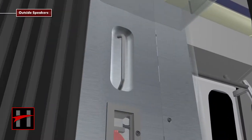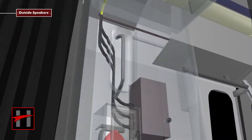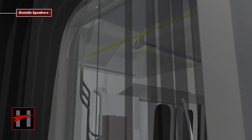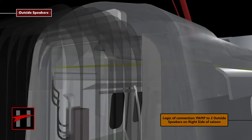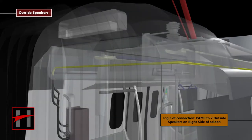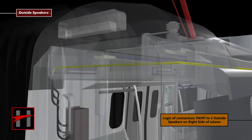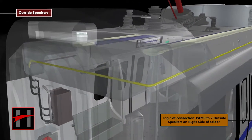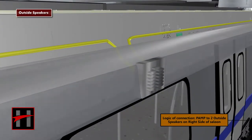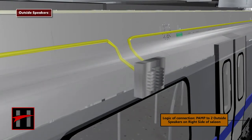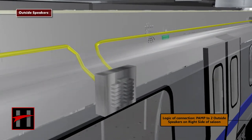The logic of connection between the power amplifier and the 2 outside speakers on the right hand side of the saloon is as shown. Surfaces have been made transparent for educational purposes wherever required.